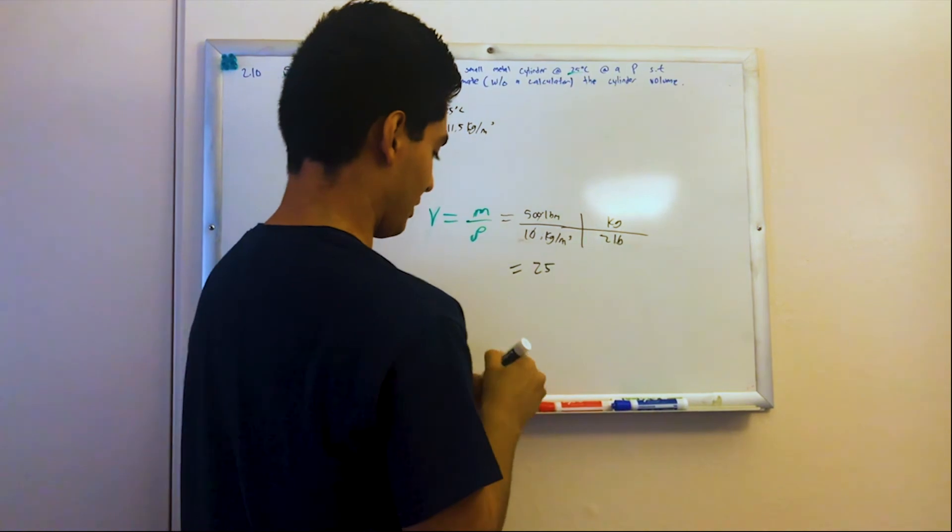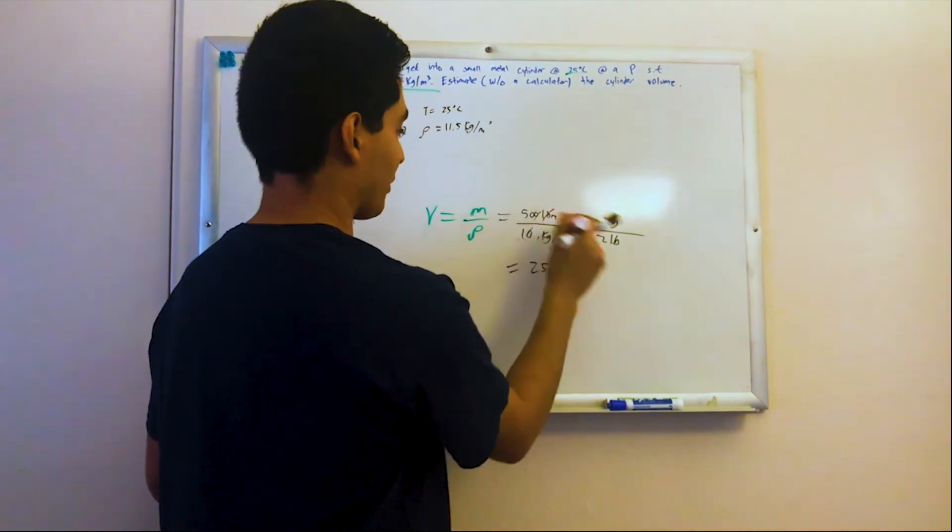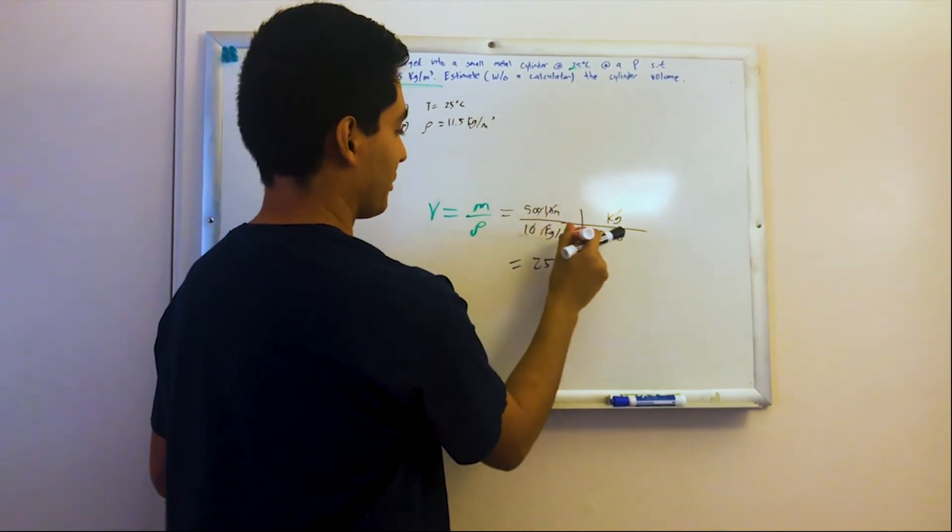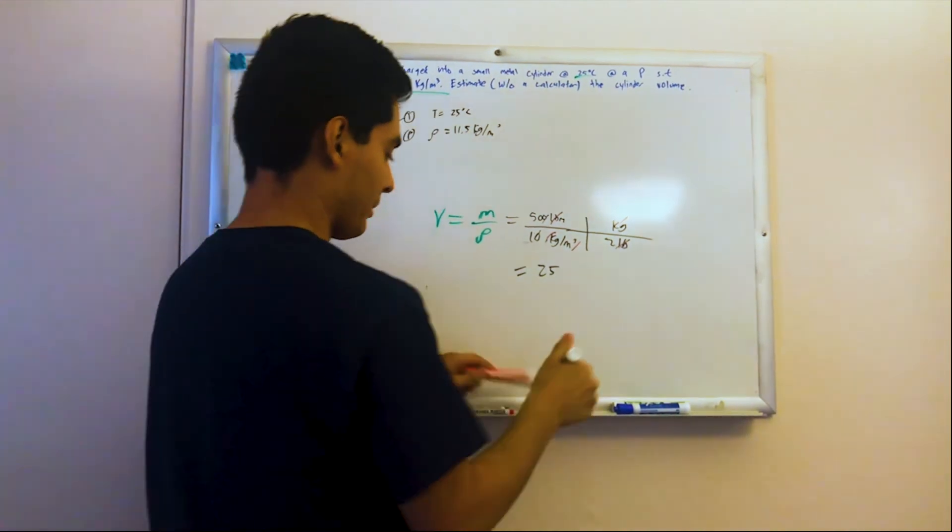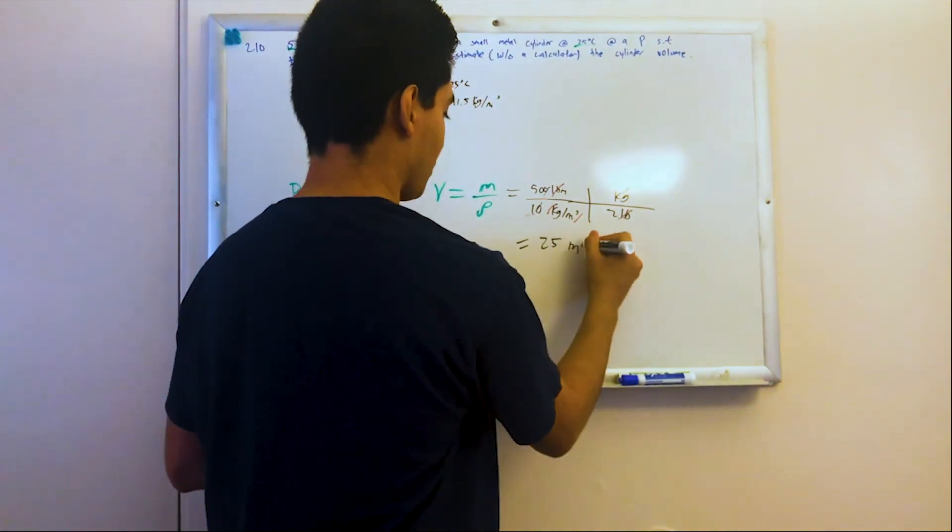And we can check the units. Pound mass, kilograms, meters cubed goes on top. And so we do have 25 meters cubed.